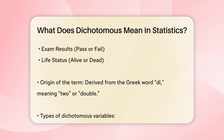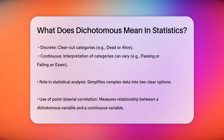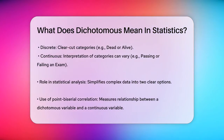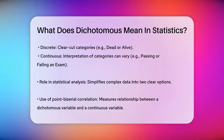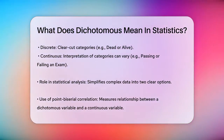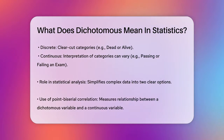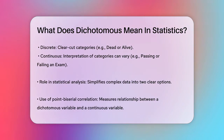Dichotomous variables are very useful in statistical analysis. They help simplify complex data into two clear options, making it easier to analyze and understand the data. For example, you can use a point-biserial correlation to see how a dichotomous variable relates to a continuous variable. This correlation measures the relationship between the two variables on a scale from minus 1 to 1.